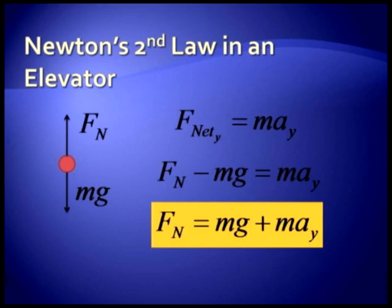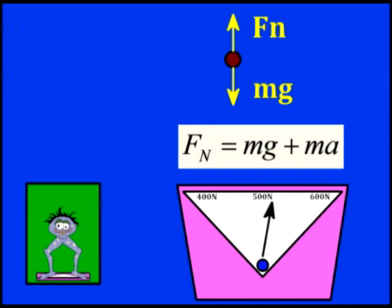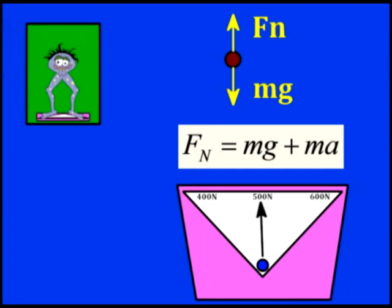Hi everyone, I'm Frank. As I stand here on the motionless elevator, the scale reads my normal weight, 500 newtons. As the elevator accelerates upwards, the scale reads more than my weight because my acceleration, Ay, is positive.